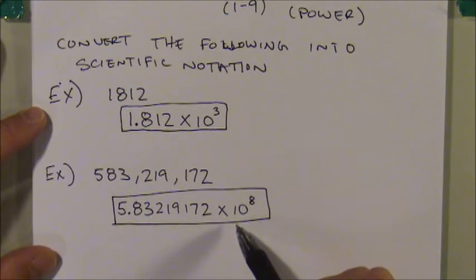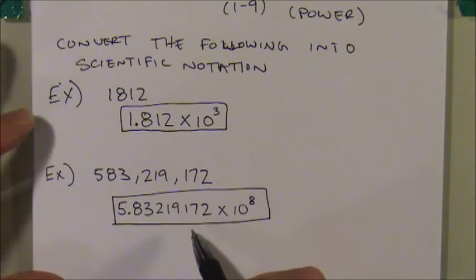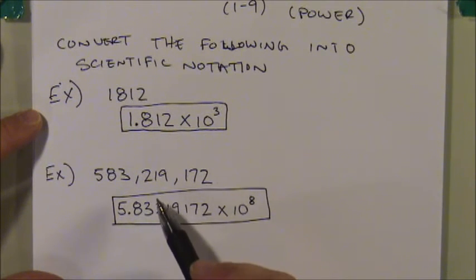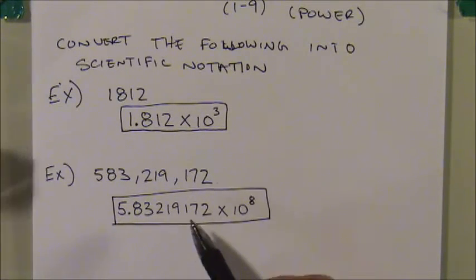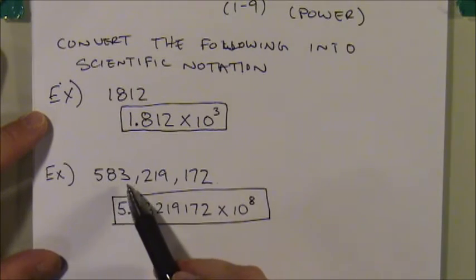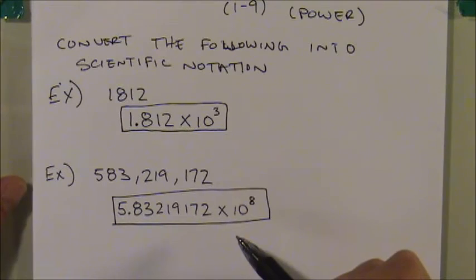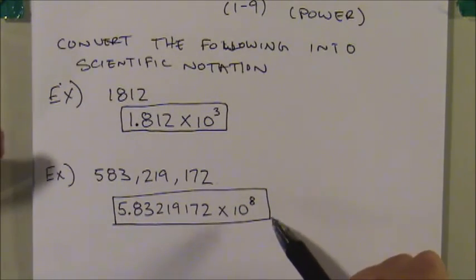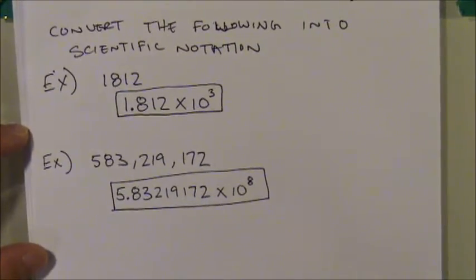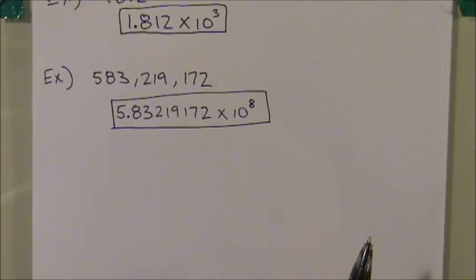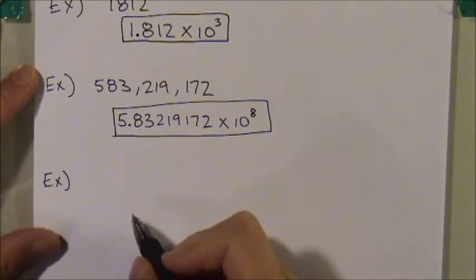Notice this number didn't actually get shorter to write — it's even longer than before. This reinforces the point that scientific notation isn't only about making numbers easier to write. In this case every digit was significant, so none were dropped, and adding the power of ten made the expression longer than the original.